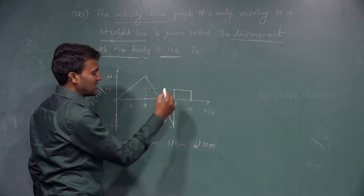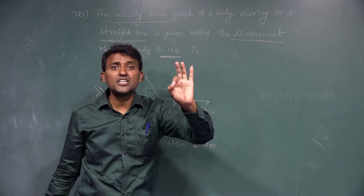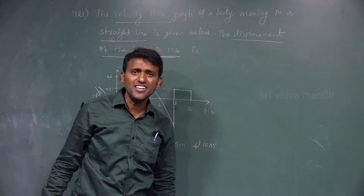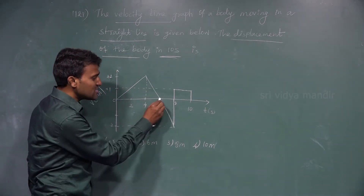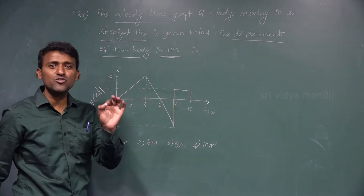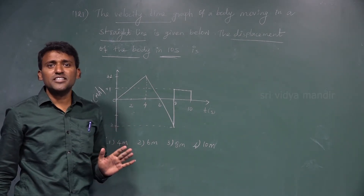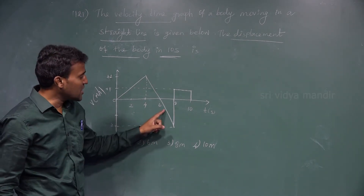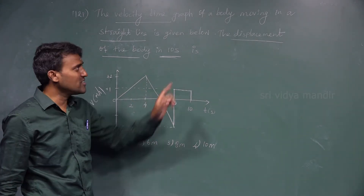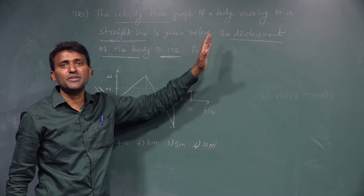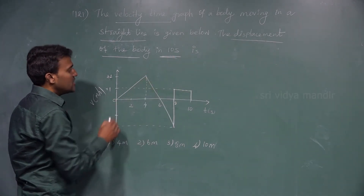They are asking for displacement. Displacement is a vector quantity, so we have to write the negative side as a negative symbol. If they asked for distance, this negative would also be considered as positive. But since they ask for displacement, which is a vector, we must retain the sign.